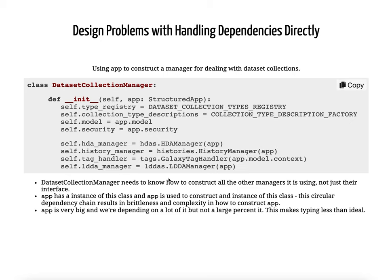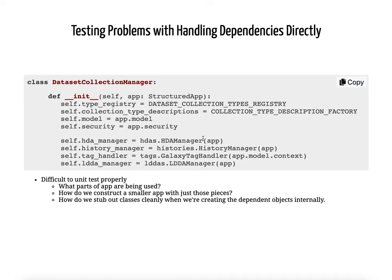We're still constructing these dependencies directly, and this is unfortunate for a few different reasons. We just want to use a history manager — we don't want to know how to construct a history manager. As we can see here, the different dependencies are constructed in different ways. Thinking about unit testing makes it really clear: if I'm going to unit test this, I need to construct this app. What components of app are necessary? The only way to know is to come in here and look at it. And if I'm constructing that history manager from inside here, how do I stub that out from the outside? This is not a good setup for unit testing.